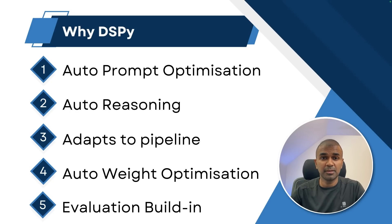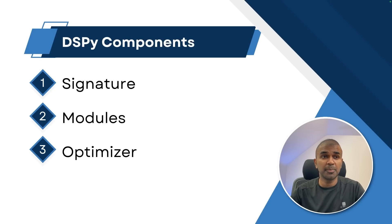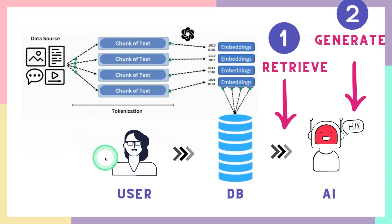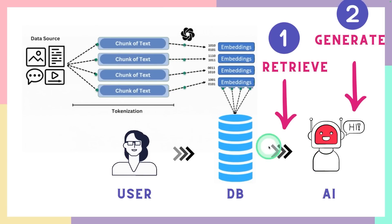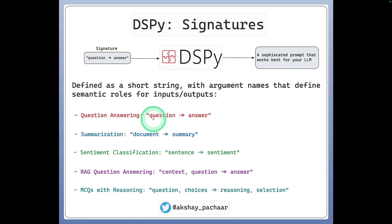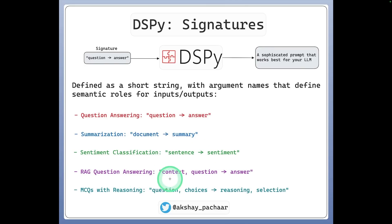Before going into detail, there are three important components in DSPY. The first one is signature, the next is modules, and the third is optimizer. The signature is focused on the type of system we are building — in this case, question and answer, or sometimes content and summary. Signatures are basically input and output, such as question-answer, document-summary, sentence-sentiment, context-question-answer for RAG question answering, or question-choices with reasoning and selection as output.